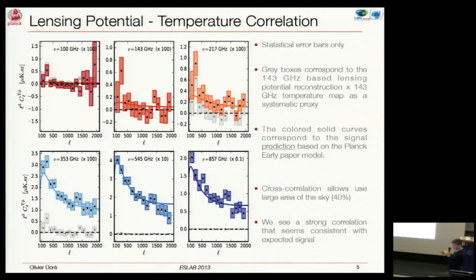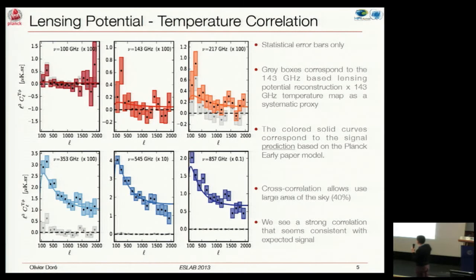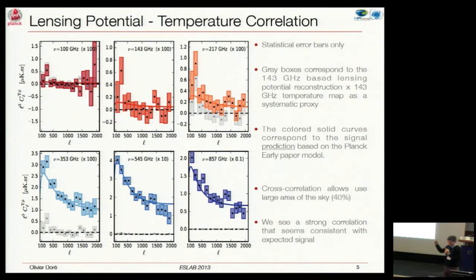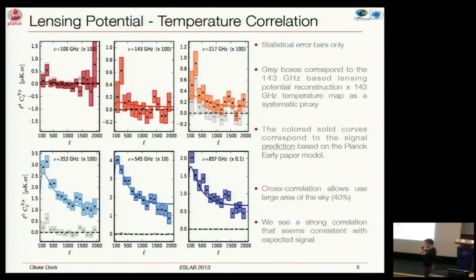As you increase in frequency, you see a very high signal with very high significance. The statistical error bars show the significance picks about 42 sigma at 545 GHz. The solid curve is a prediction from the model we developed for early papers published about a year and a half ago, and you see reasonable agreement between the model we predicted and what we measure. The gray box corresponds to the lensing reconstruction at 143 GHz correlated with the temperature also at 143 GHz—a natural systematic proxy—and the signal we're seeing is way above this, which is satisfying.